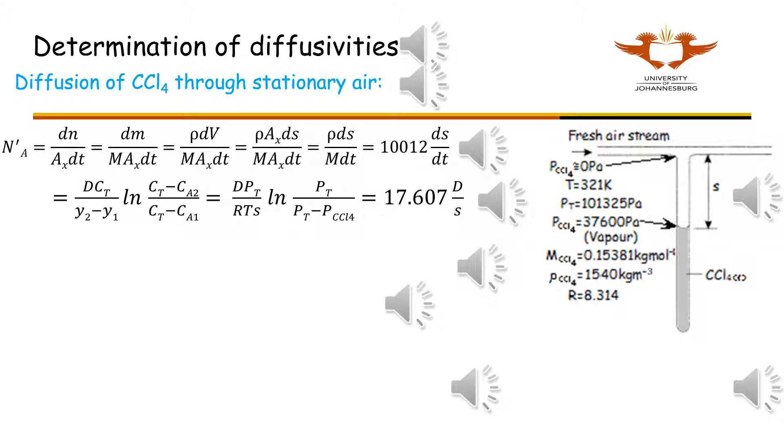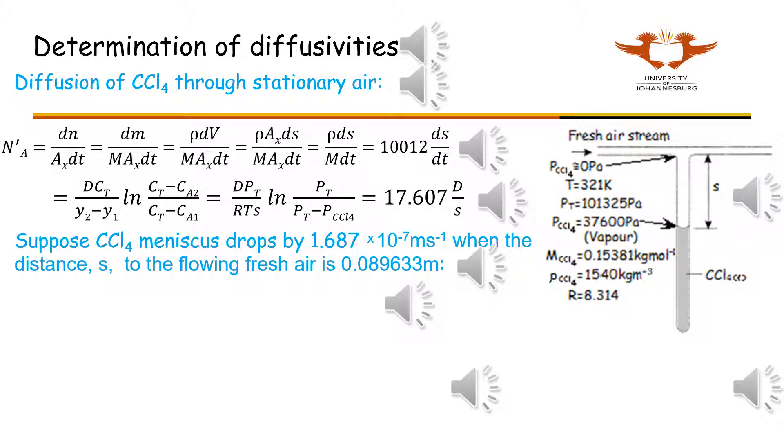Here you are using the formula for diffusion of a gas through a stationary gas. You can convert the concentrations to partial pressures using the ideal gas law. You can plug these values into the equation above and solve for the diffusivity D.